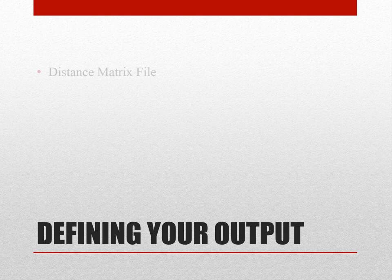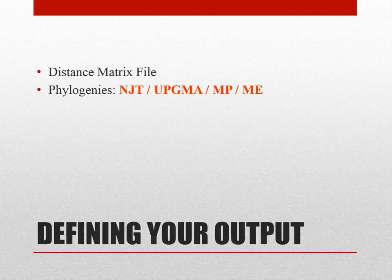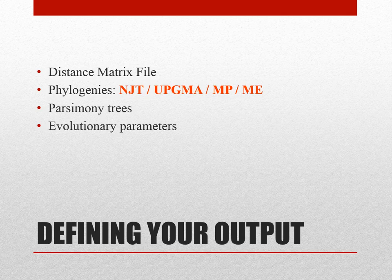You have to define your output in MEGA. You can get a distance matrix file, a phylogenetic output in the form of a phylogenetic tree, parsimony trees, and you can select evolutionary parameters to determine whether a gene is fixed in a particular population. You can also select molecular clocks.